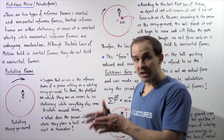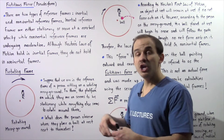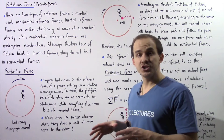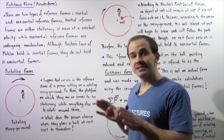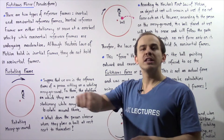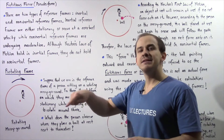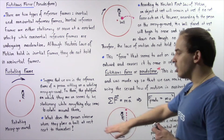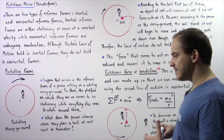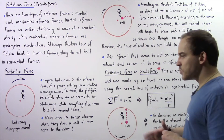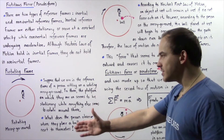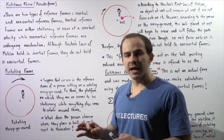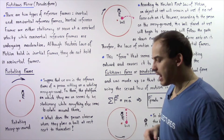So if we sit down on a merry-go-round that is rotating, that disk will seem stationary while everything else around seems to rotate around that person. Now let's ask the following important question: what does the person sitting on that merry-go-round observe when they place a ball at rest next to themselves?